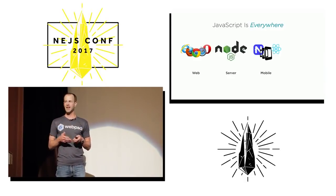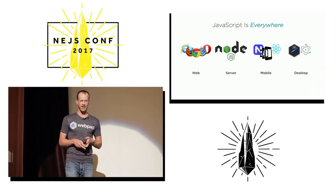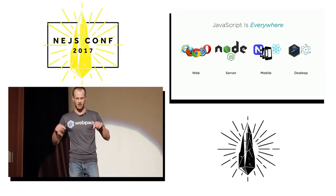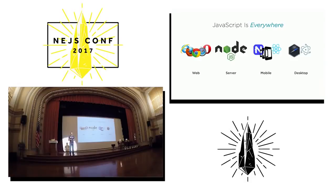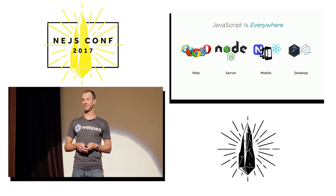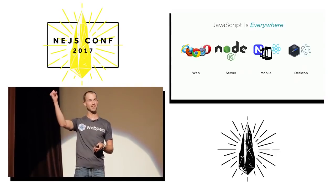And I can even write desktop apps using things like Electron. My favorite editor today is VS Code, and that is written in HTML, JavaScript, and CSS because it uses Electron. My favorite way to communicate and share GIFs with my co-workers is Slack — and that is again written in plain old JavaScript using Electron.